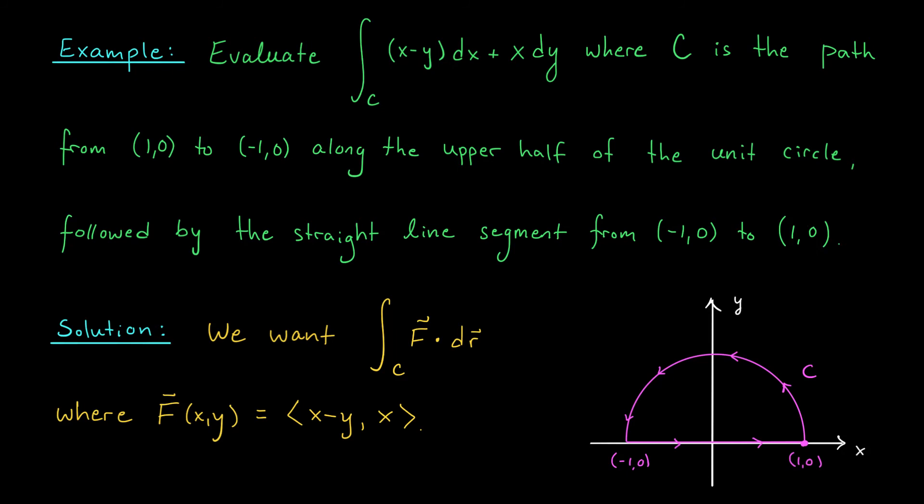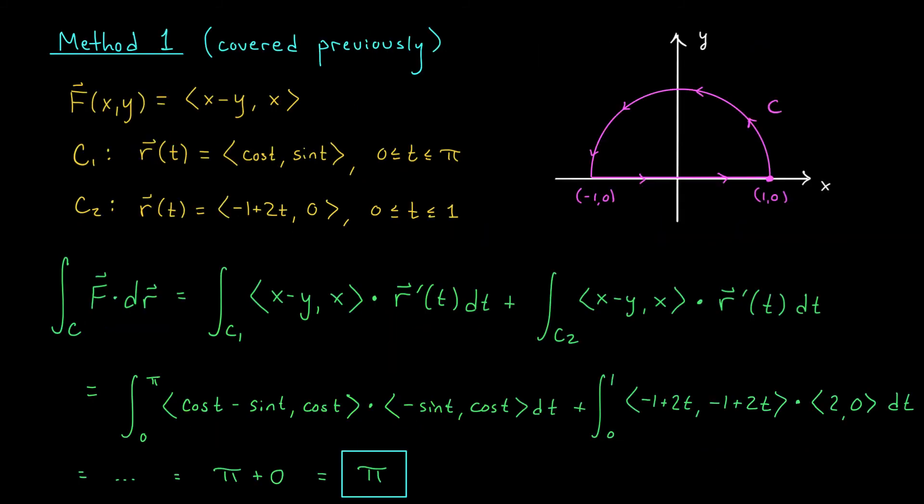Now, we actually solved an almost identical problem to this one in our example video on line integrals of vector fields. So I'm going to start by reminding you of what we did there, and then I'll show you how to solve this problem using Green's theorem. If we didn't know Green's theorem, this is how we would have to solve the problem. We would probably start by checking if our vector field is conservative, because then we can use the fundamental theorem for line integrals. But here, it's not too hard to see that our vector field is not conservative. After all, the partial of Q with respect to X is 1, whereas the partial of P with respect to Y is minus 1. So it fails the component test. It's not conservative, and we can't use the fundamental theorem.